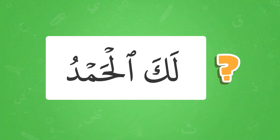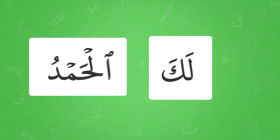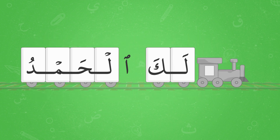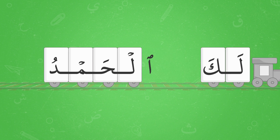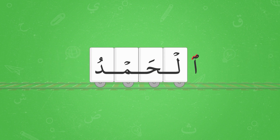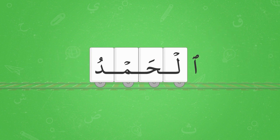Do you know how to find out if a word train has an engine or not? When a word train doesn't have an engine, it starts with a pole and a special symbol on top of it. The special symbol looks like a fish head. We will call this symbol a connector.